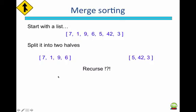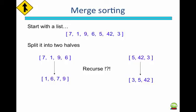We can use that algorithm plus one more to accomplish merge sort. With merge sort, we start with an unsorted list, we split it into two halves, we call merge sort on both of those halves, and we assume that that works. So we've got two sorted lists, and then we apply the merge algorithm to sort and merge them together.